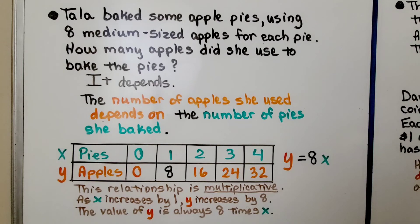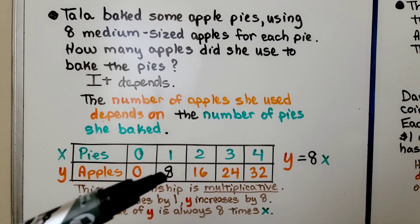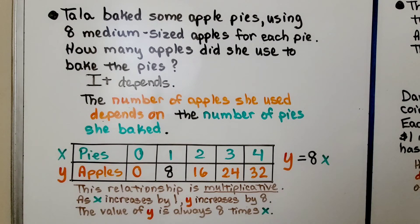This relationship is multiplicative. As x increases by 1, y increases by 8. The value of y is always 8 times the value of x. Y is equal to 8x.